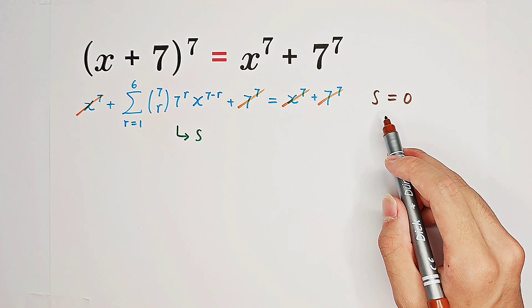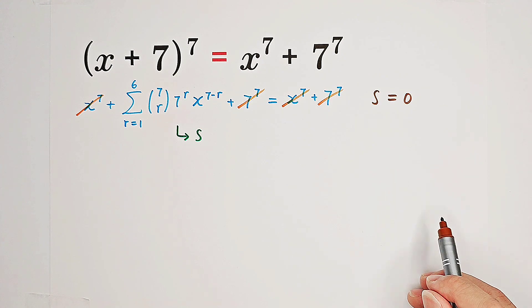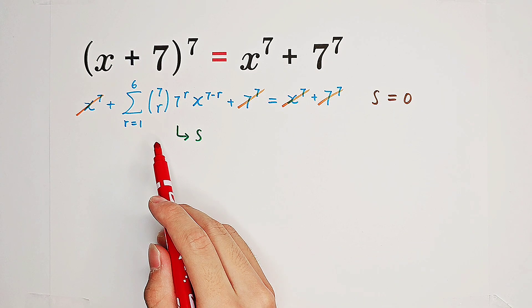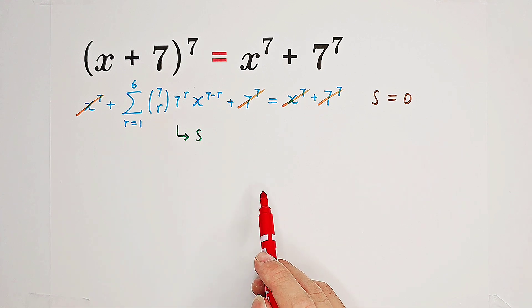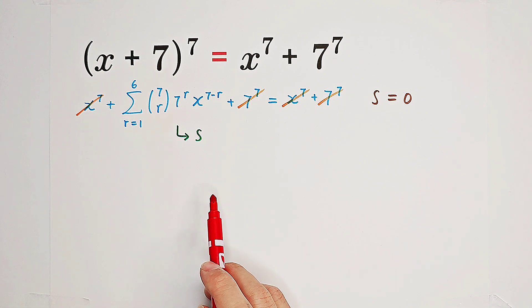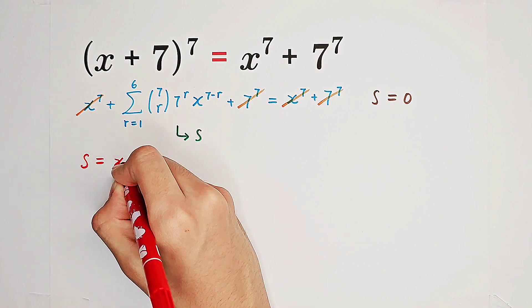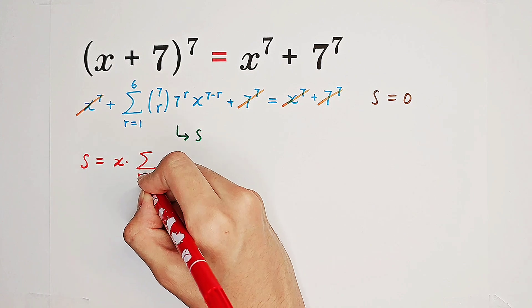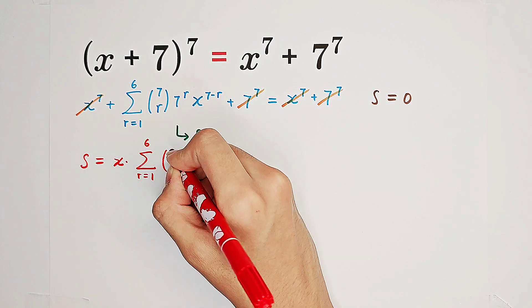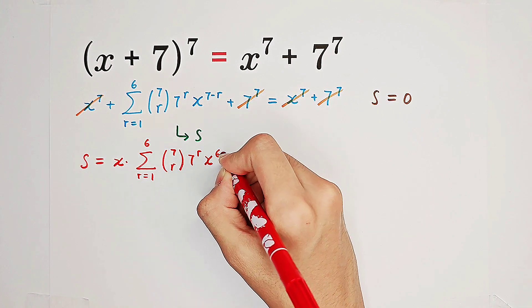Usually, what shall we do for dealing with such equations? Let's try factoring. We know that S actually contains 6 terms. Do these 6 terms have a common divisor? Because r runs from 1 to 6, each term contains a factor of x. So we can take out an x. S equals x times the remaining sum, where the exponent of x becomes 6 minus r.